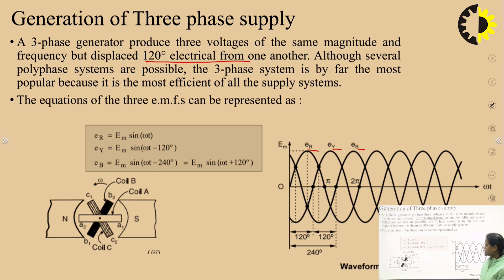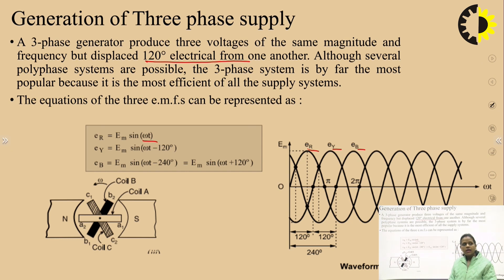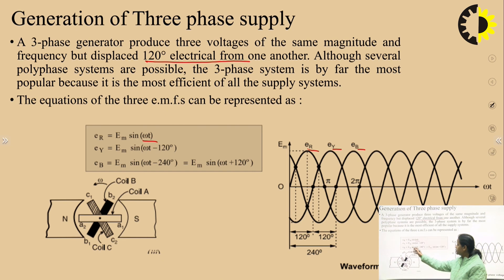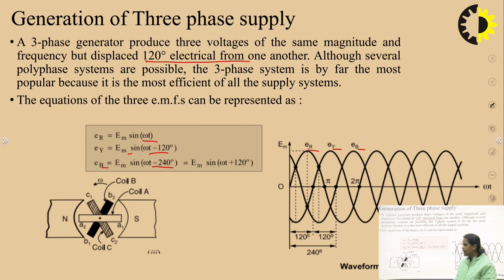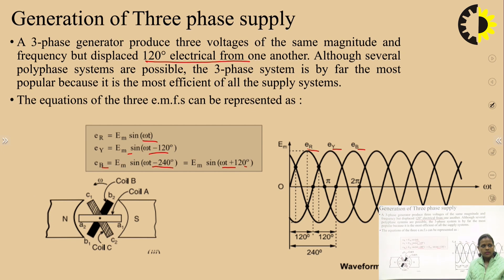The equations for the three EMFs are: Er = Em sin(ωt), and since Ey lags Er by 120 degrees, Ey = Em sin(ωt − 120°). The third, Ev, can be written as Em sin(ωt − 240°), or equivalently Em sin(ωt + 120°).